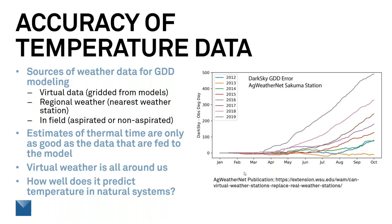One publication I love recently was from Ag Weather Net — here's the link if you want to search for it. These are the growing degree days from Dark Sky — a virtual weather source — minus the actual observed degree days at the Ag Weather station at Sakuma station, accumulating from January 1. For some years there's not much error, but in 2019 there were massive differences between the Dark Sky estimate and the observed growing degree days. Other years were less — for example, in 2013 there was no problem — but this graph clearly shows that sometimes we're way off the beaten path.